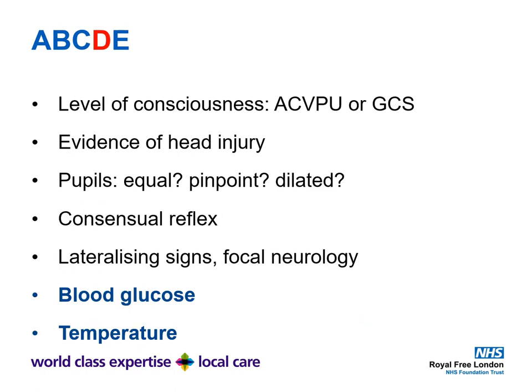In D — disability or neuro — assess level of consciousness: are they alert, confused, responsive to voice, pain, or unconscious? You can use the GCS, though it's important to know it well and calculate it correctly. Look for evidence of head injuries: Battle's sign, raccoon eyes, scalp bleeding, maxillofacial injury. Examine the pupils — are they equal? Are they pinpoint, for example in opioid toxicity? Dilated, say from ecstasy poisoning? Is there a consensual reflex? Are there any lateralising signs or focal neurology to suggest a massive subarachnoid haemorrhage or stroke?